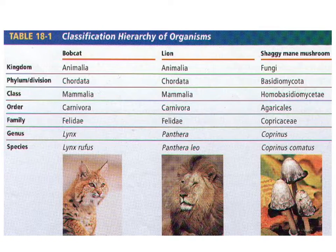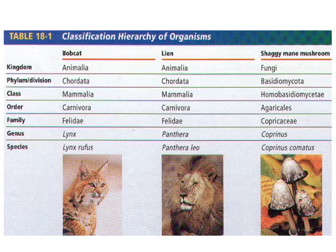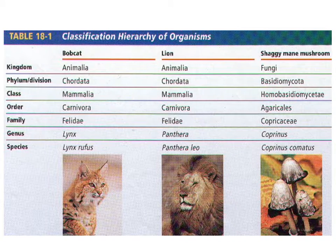This classification system helps us group organisms that are similar. For example, the bobcat and the lion are in the same kingdom, phylum, class, order, and family. It's not until the genus that we start to see differentiation — bobcats are in the genus Lynx, species Lynx rufus, while lions are in the genus Panthera, species Panthera leo. We can compare that to something like a mushroom, and we see right away there is a different kingdom for that group of organisms.